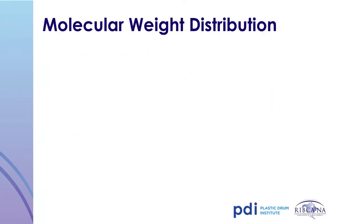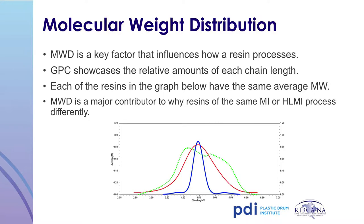The third key property of polyethylene, in addition to density and melt index, is molecular weight distribution. Chains can vary in length — long chains versus short chains — and molecular weight distribution quantifies the amount of each type. A broader molecular weight distribution contains a wider array of low and high molecular weight fractions, while a narrower distribution is more uniform. Molecular weight distribution is one of the factors that determines how a resin will process; resins from different producers may behave differently due to molecular weight distribution even when density and melt index are similar.